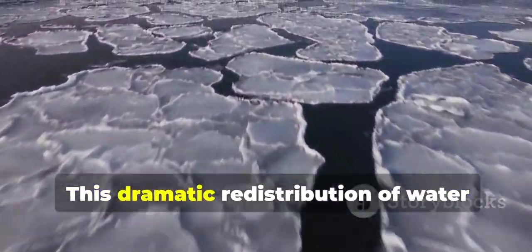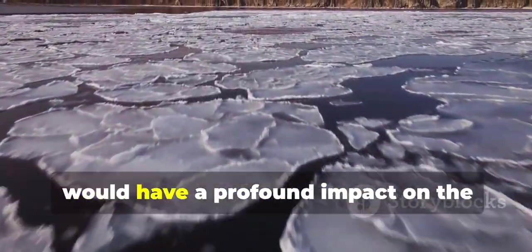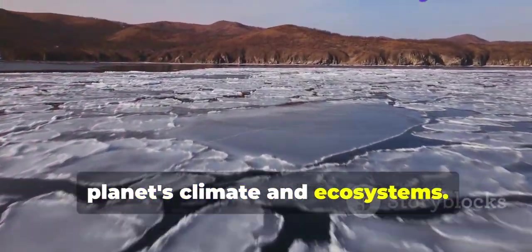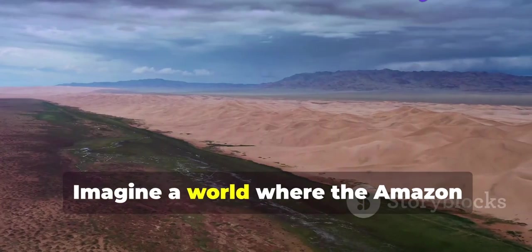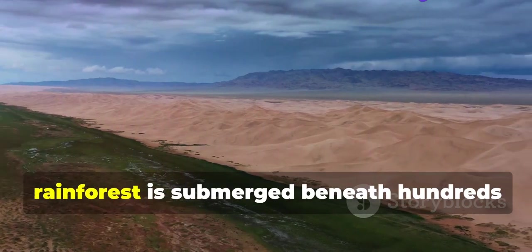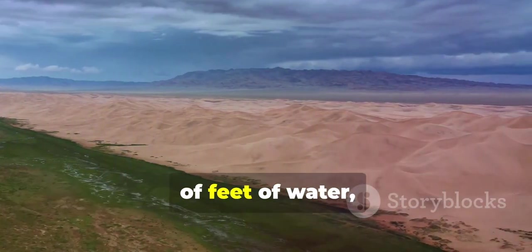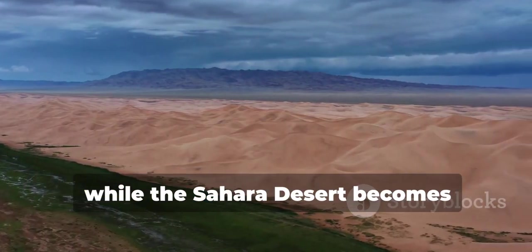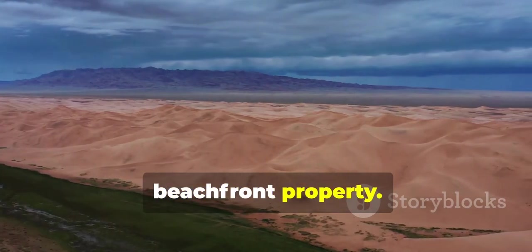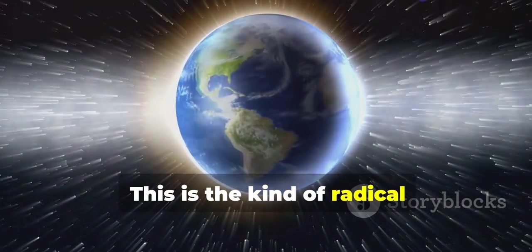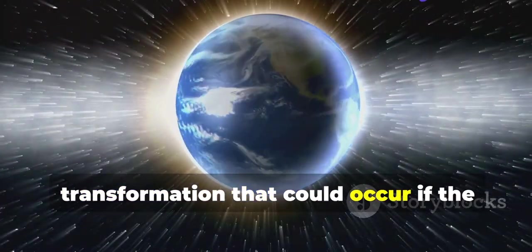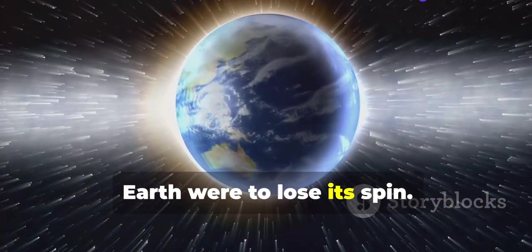This dramatic redistribution of water would have a profound impact on the planet's climate and ecosystems. Imagine a world where the Amazon rainforest is submerged beneath hundreds of feet of water while the Sahara Desert becomes beachfront property. This is the kind of radical transformation that could occur if the Earth were to lose its spin.